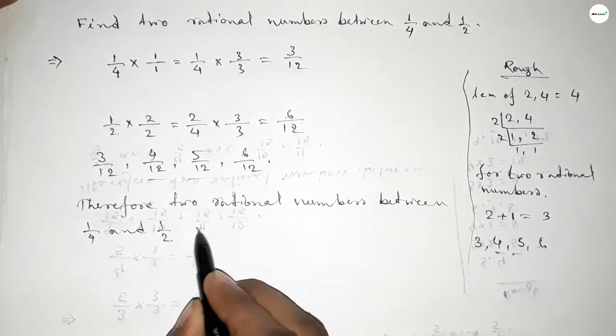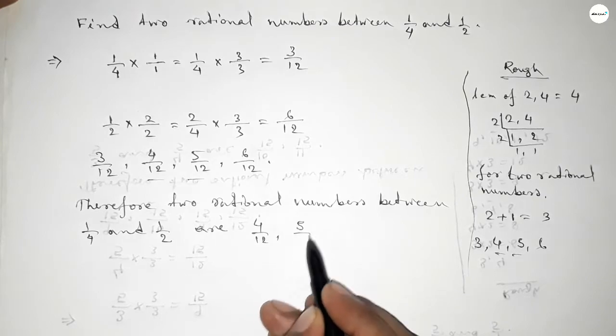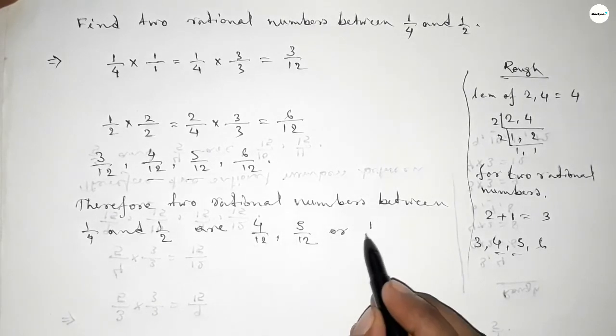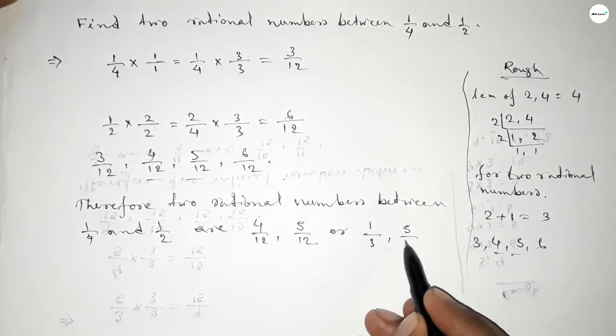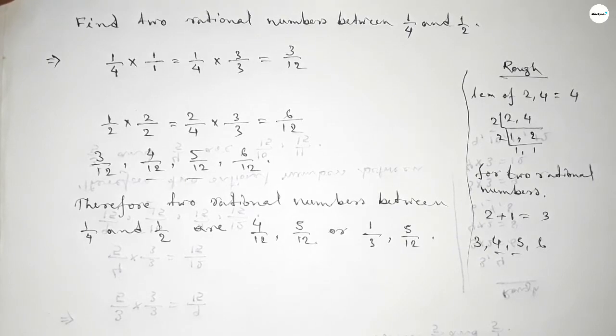Or we can write, if you divide both by 3, 4/12 becomes 1/3, and 5/12 remains 5/12. That's all.